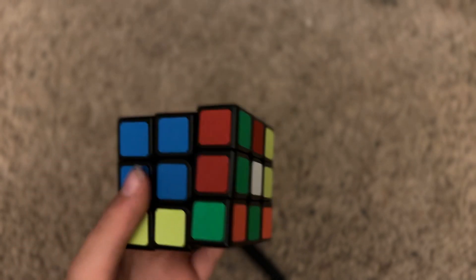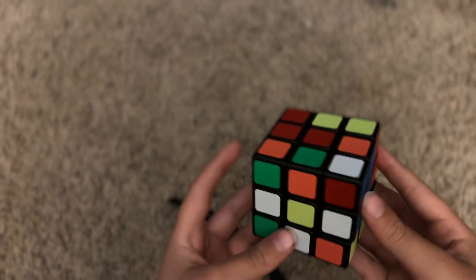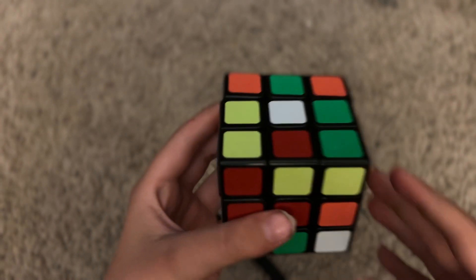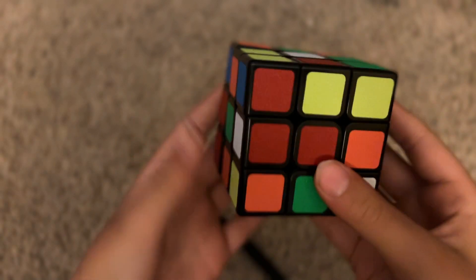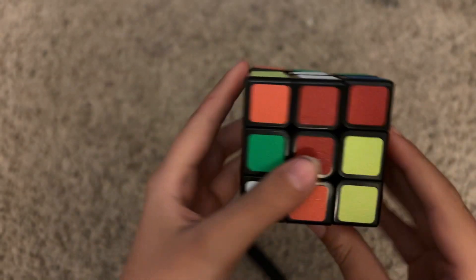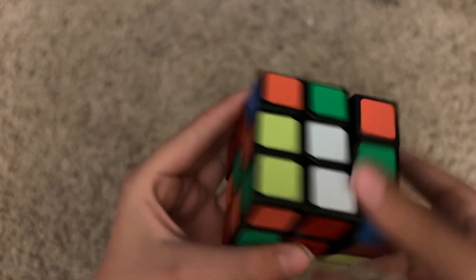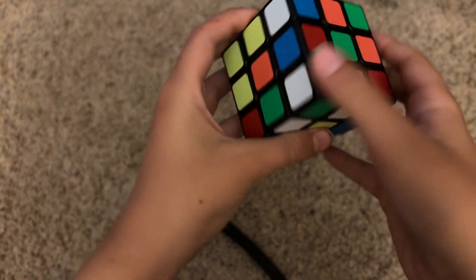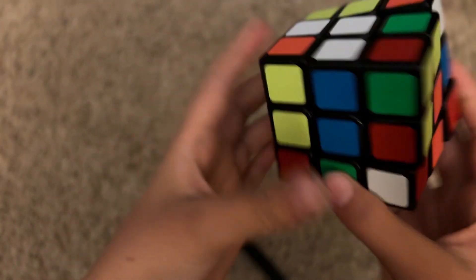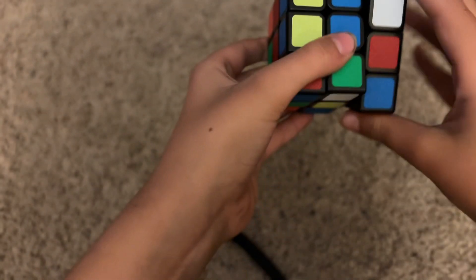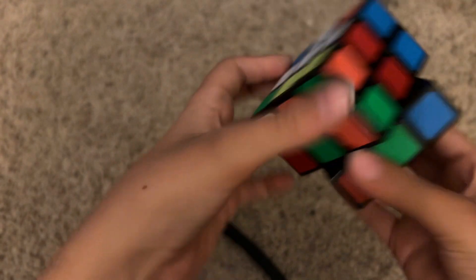I'm going to be doing this in like a series. So everyone knows how to do the CROSS, it's the same as beginner method. You would know this from the last video. I'm going over F2L in this video.